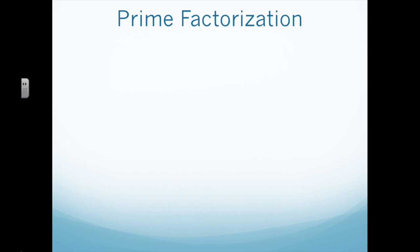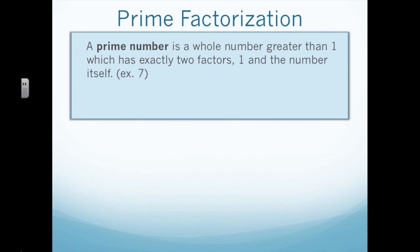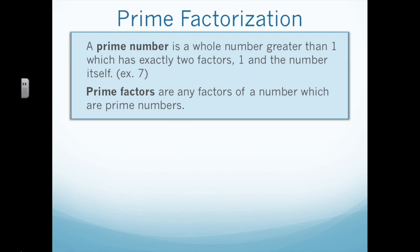Now, let's review prime factorization, but we have to review a couple of terms first. A prime number is a whole number greater than 1 which has exactly two factors: 1 and the number itself. So, 7 would be an example of a prime number, because it can be divided only by 7 and 1. Prime factors are any factors of a number which are prime numbers as well. So, 7 would be a prime factor of 42, because 6 times 7 equals 42, and 7 is both a factor of 42 and a prime number — so we would call that a prime factor.